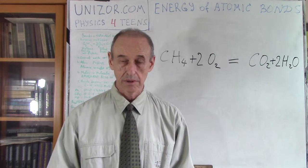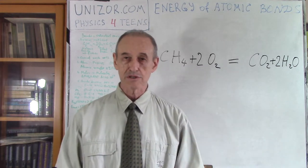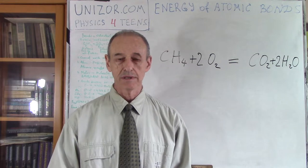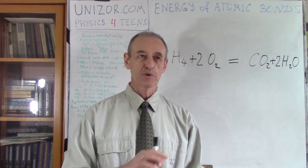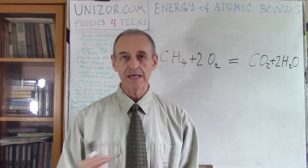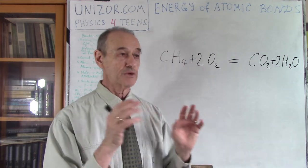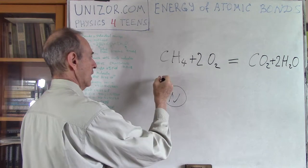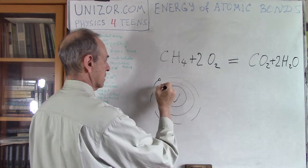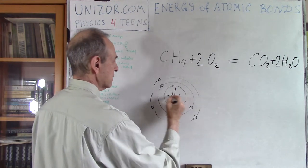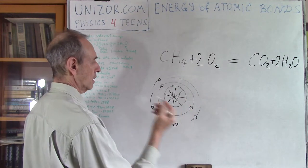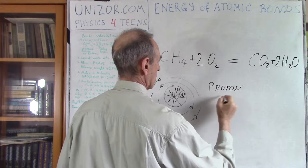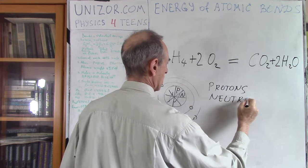What does the atom consist of? For the purpose of this course, we will build a model of the atom as more or less agreed by all physicists. For our purposes, we can view the atom as containing a certain nucleus surrounded by electrons on orbits around this nucleus. The nucleus, in its turn, contains two types of particles: protons and neutrons. So we have protons, we have neutrons, and we have electrons.